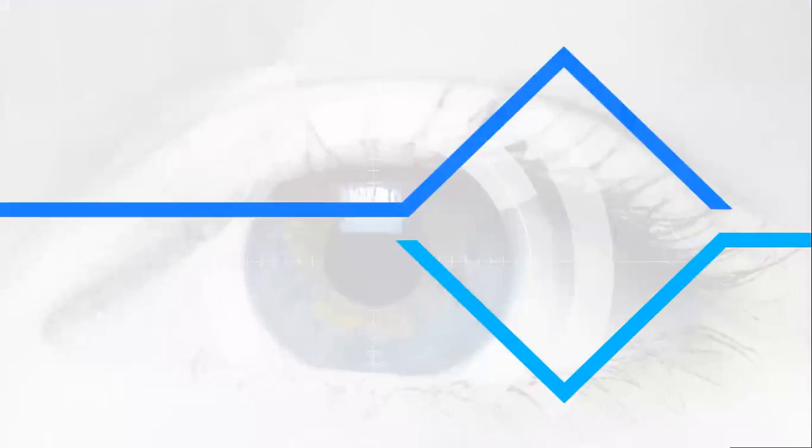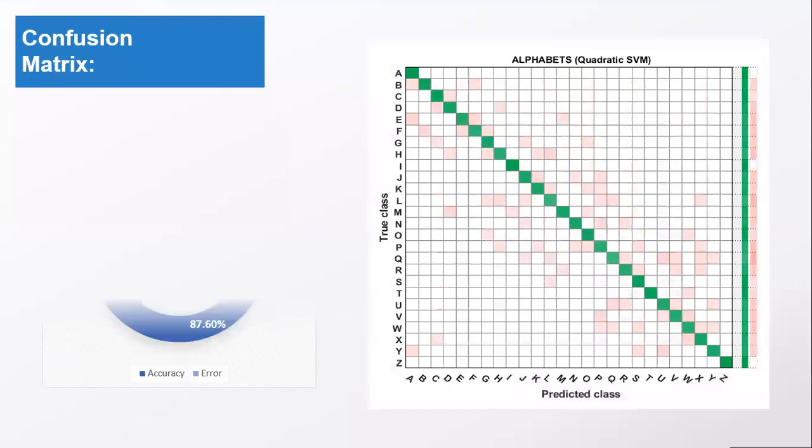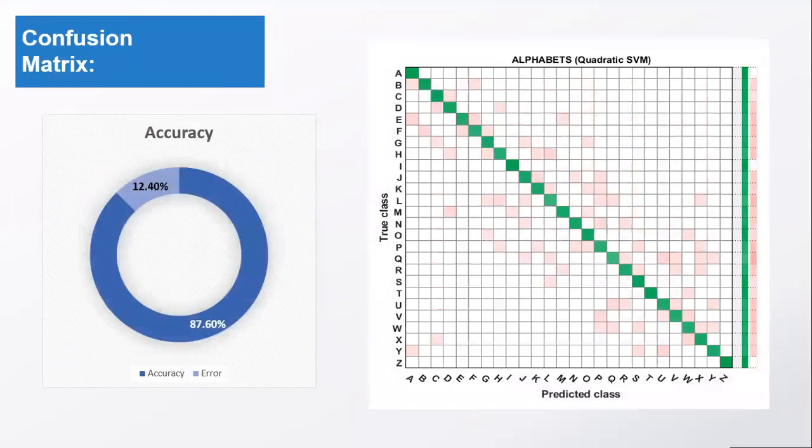This shows the results. This confusion matrix shows all of our results with alphabets from A to Z. Quadratic SVM was utilized and we achieved the accuracy of 87.6%, shown in the confusion matrix and bar diagram.